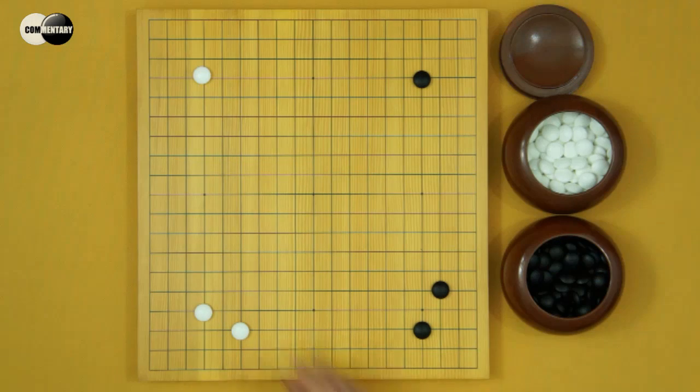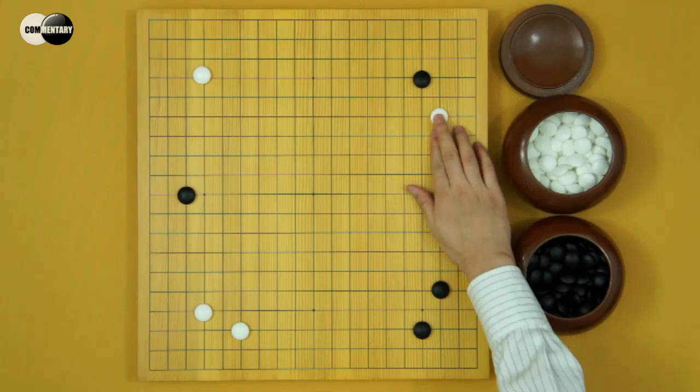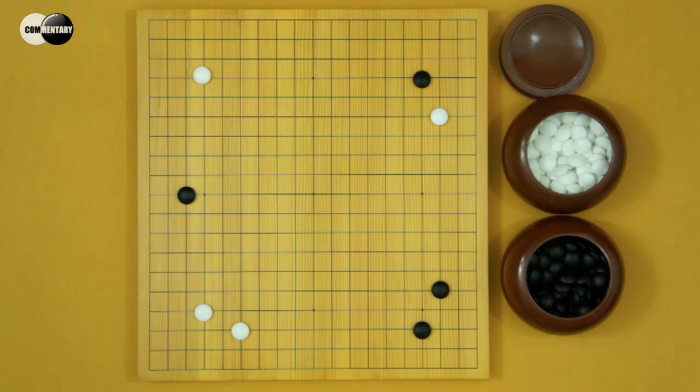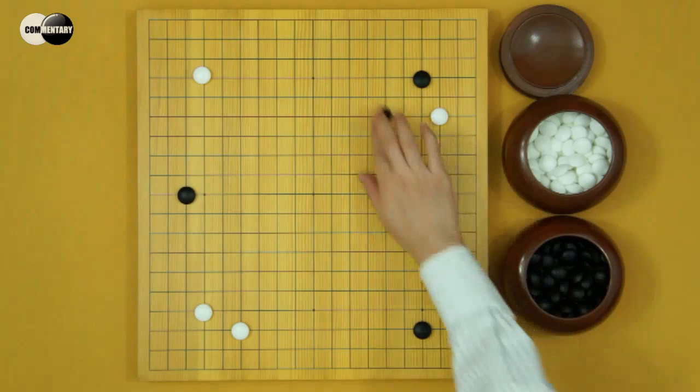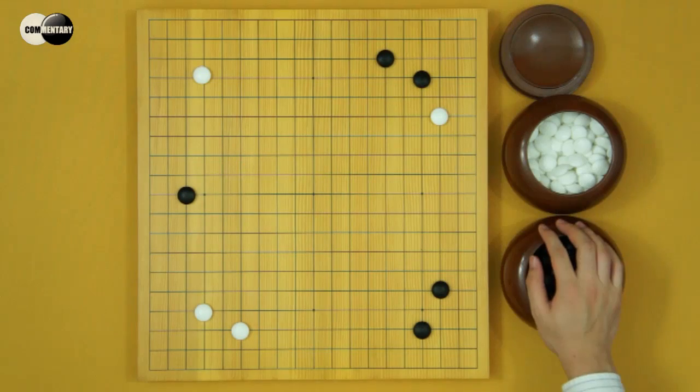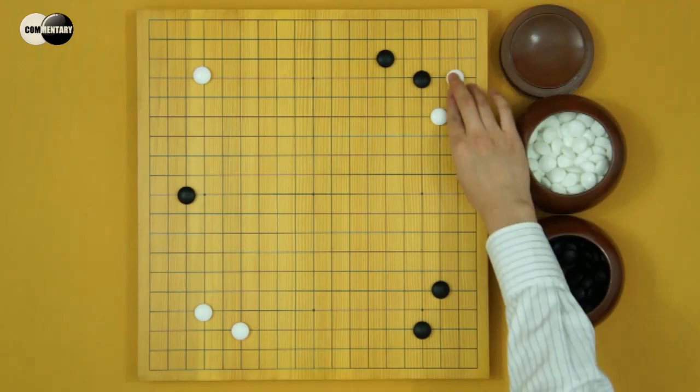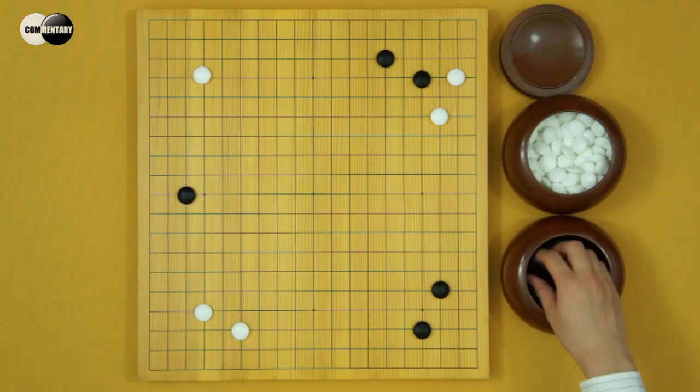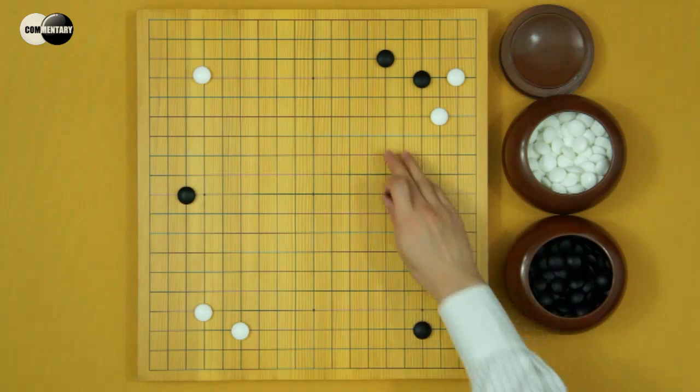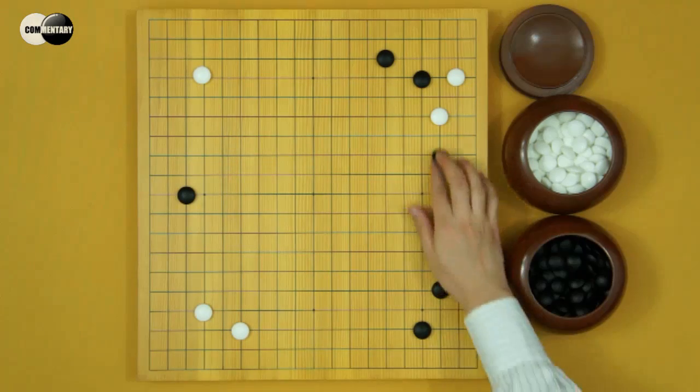White plays a splitting move. This move seems normal. But from an accurate point of view, it's a questionable move. This is because White kakari here. If Black keima, White keima. Now the ladder is bad for Black. Black can't contact.